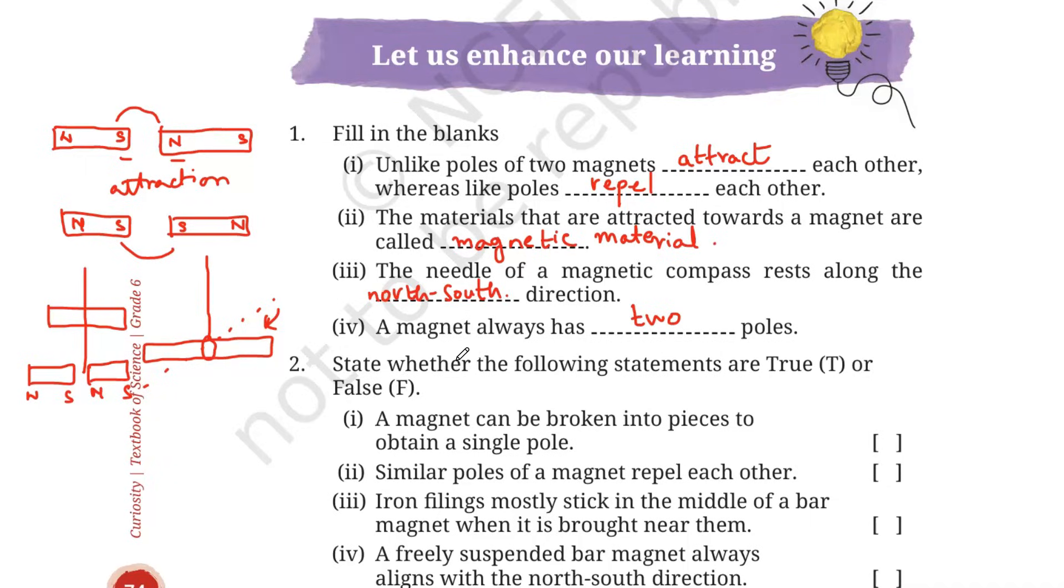Number 2: state whether the following statements are true or false. Our first question is: a magnet can be broken into pieces to obtain a single pole. What did I tell you? Even if you break a magnet, how many poles do you have? Two poles. So magnets never exist in single poles. Even if you break it into pieces, it will have two poles, not a single pole. So the first statement is false.